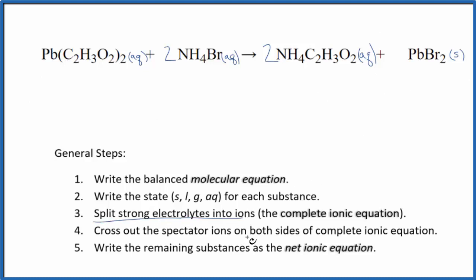Now we can split strong electrolytes into their ions, and that'll give us the complete ionic equation. We have lead, but we don't know the charge on lead since it's a transition metal and can have different charges. We do know that this whole acetate is always 1-, we have two of them, so lead has to be 2+. So we have the Pb²⁺ ion.